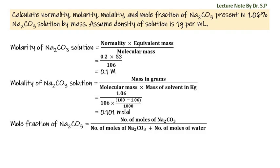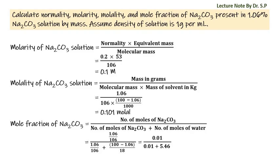Mole fraction of sodium carbonate is equal to number of moles of sodium carbonate divided by number of moles of sodium carbonate plus number of moles of water. That is equal to (1.06/106) divided by (1.06/106 + (100 minus 1.06)/18), that is equal to 0.01 divided by (0.01 plus 5.46), that is equal to 0.0018.